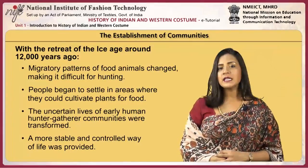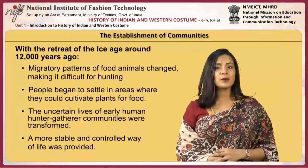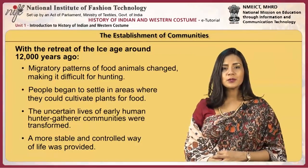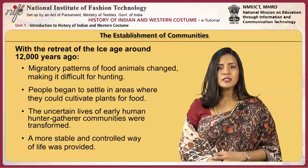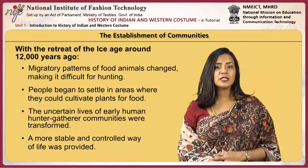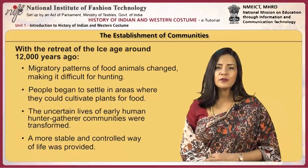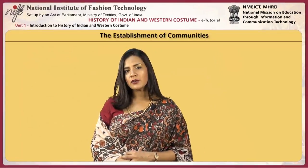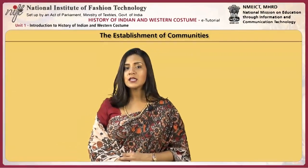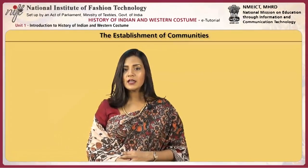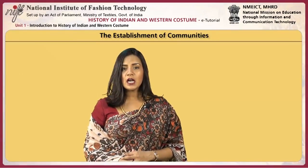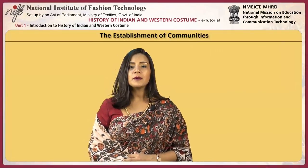This led to people maintaining captive herds of animals as a ready supply of food. Additionally, people began to settle in areas where they could cultivate plants for food. The domestication of animals and development of agriculture transformed the uncertain lives of early hunter-gatherer communities, providing a more stable and controlled way of life. These early agrarian societies developed along the banks of major rivers such as the Tigris and Euphrates in Western Asia, the Indus in Central Asia and the Nile in North Africa around 10,000 years ago. The advances in technology, architecture and social integration were rapid and dramatic.